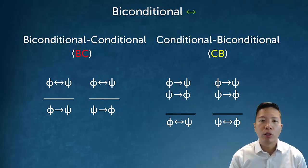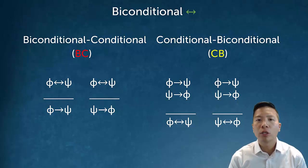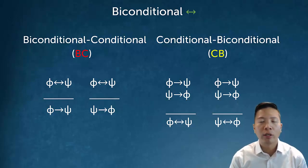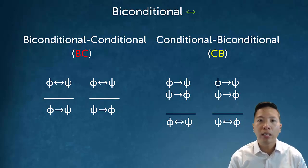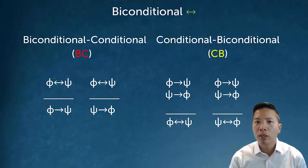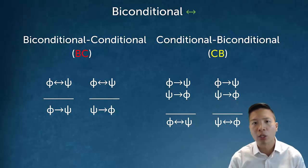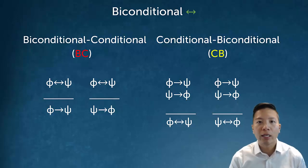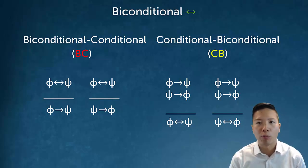The last two rules are the elimination and introduction for the biconditional. Biconditional-to-conditional lets us eliminate a biconditional and move to a conditional statement. If I know phi biconditional psi, I can infer either direction of the conditional. The introduction rule for the biconditional lets us go from both directions of a conditional and infer the biconditional itself. So if I know phi arrow psi and psi arrow phi, I can conclude phi biconditional psi.